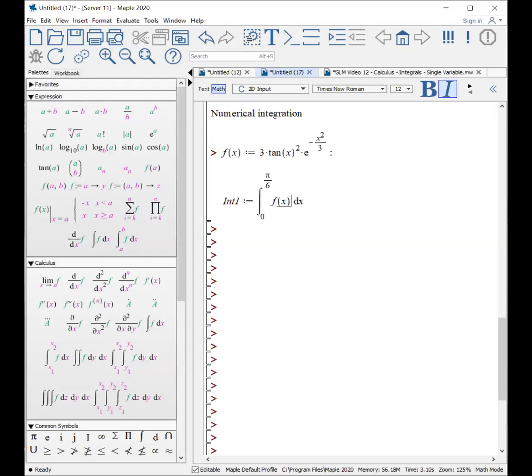So what if we need to do a numerical integration? Here's a function. It has only X and numbers in it. And then we want to do this calculation here from zero to pi over six. Again, Maple's going to try to do this exactly as possible. So I'll hit enter and you'll watch. It's going to take some time to try to figure out this calculation.